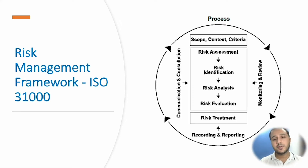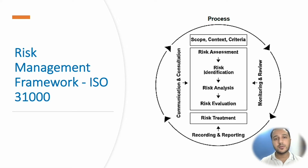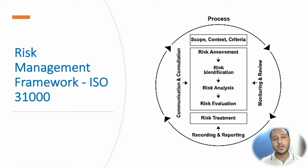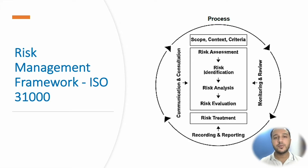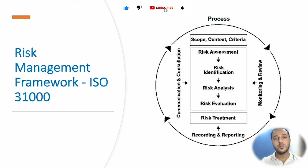Then there is risk treatment — whether you want to accept the risk, avoid the risk, or place controls. How you are managing those risks also needs to be taken into account. Three other things must be ensured: recording and reporting should happen, communication and consultation should be an embedded part of the risk management process, and monitoring and review should also be embedded. This is the whole process given as a guideline by the ISO 31000 risk management framework.